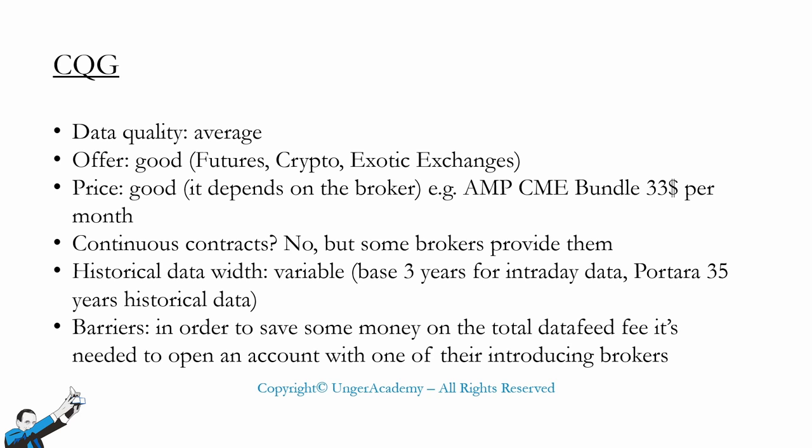The cost is also good, but it depends on the broker chosen. For example, I used to use AMP Futures and the bundle to get live data of all CME products, and that was $33 per month — so it's very competitive. Basically there are no continuous contracts, but you can ask the broker if they'll provide them. For example, I know that FXCM, which is an introducing partner of CQG, provides continuous contracts, whereas AMP Futures didn't provide them, and in that case you have to create custom futures.